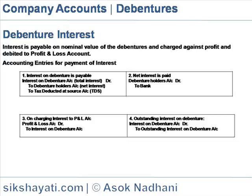Accounting Entry for Payment of Interest. Interest on debentures is payable. The total amount of interest is debited to the debenture holder's account, the net amount after deducting TDS is credited, and the TDS deducted is also credited. Net interest is then paid: debenture holder's account is debited to bank by the net amount paid.